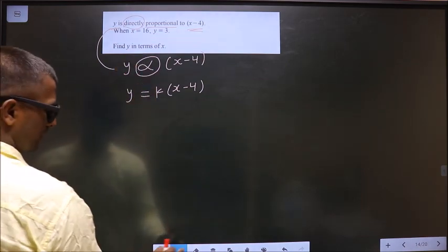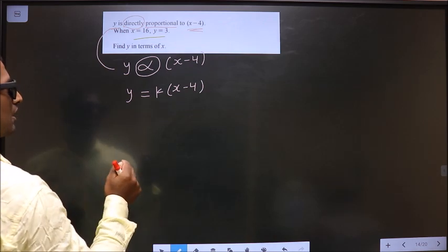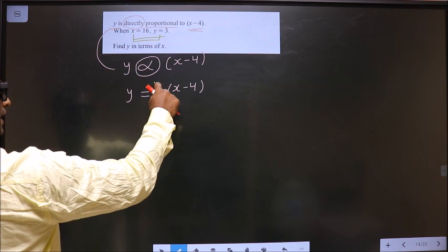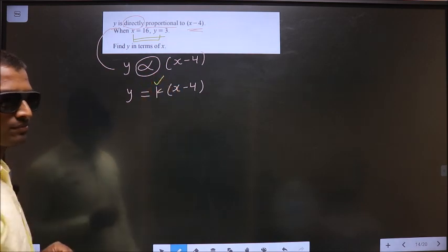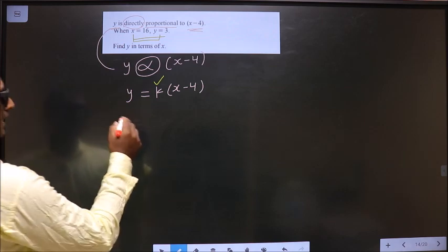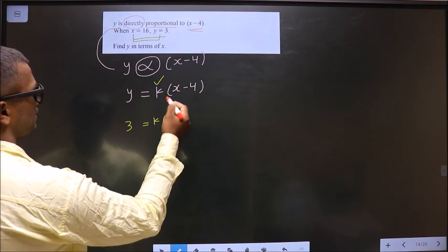When x is equal to 16, y is equal to 3. So now, by making use of these values, I will find the value for k. So let us replace it here. So y is 3, k times of x is 16.